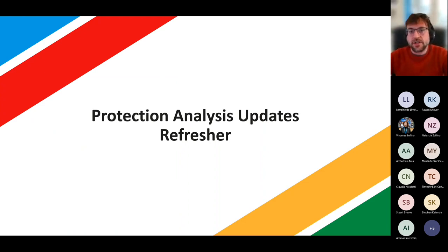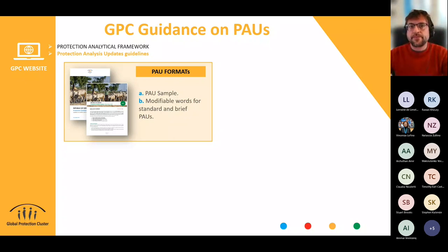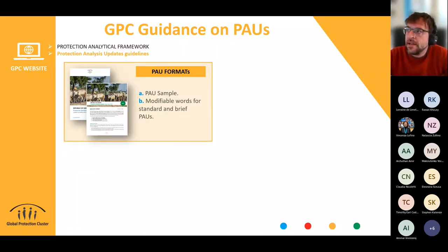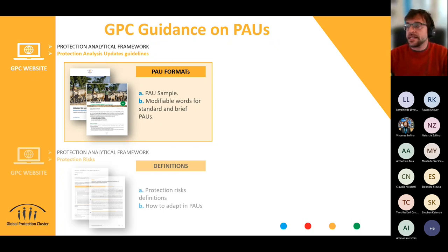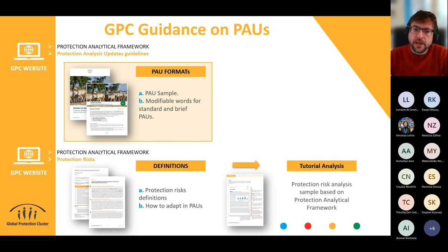Let's start with a refresher of last week's session that looked into the new guidance. In the package now available on the website under the Protection Analytical Framework section, you can find two new formats for the protection analysis updates: what we call the PAU standard and the PAU brief. Instead of just developing a format, this time we developed a complete sample — a sort of complete protection analysis update that can inspire you when you use it in operations. The second element is the Protection Risk Explanatory Note, which includes definitions and guidance on how to adapt protection risks in PAUs, together with a two-pager tutorial on how to draft narrative analysis on protection risks.